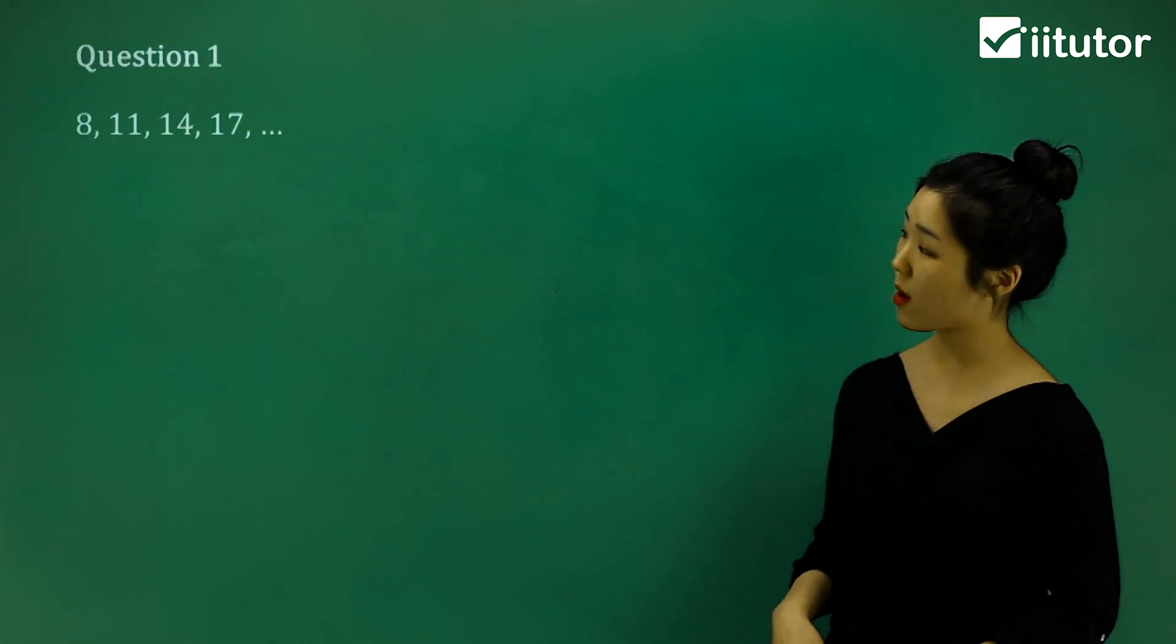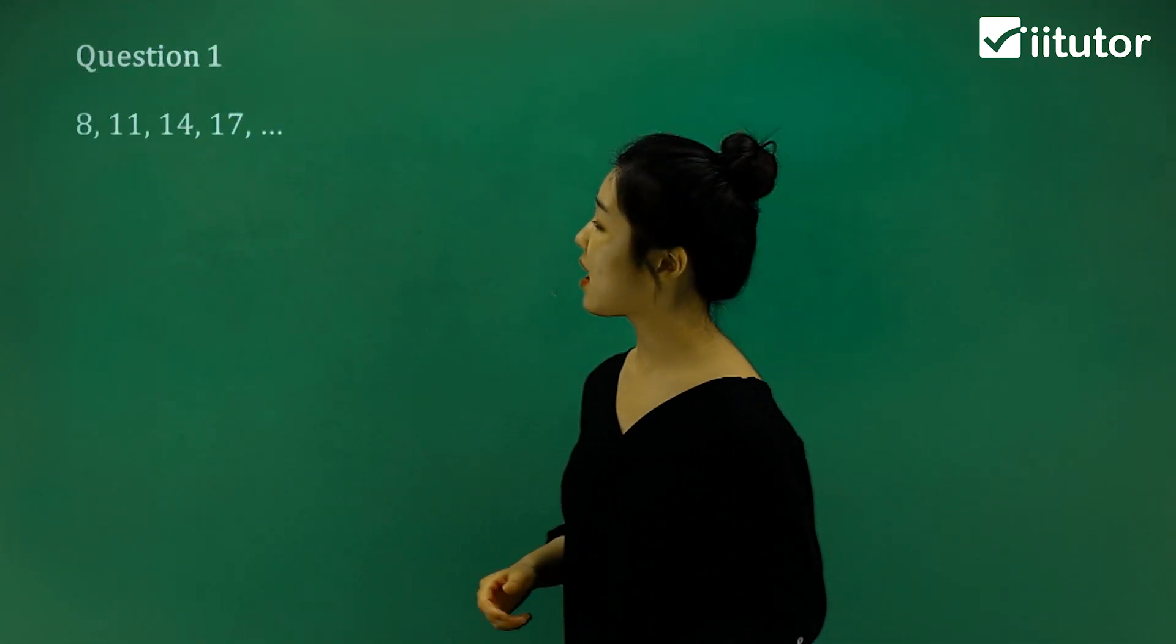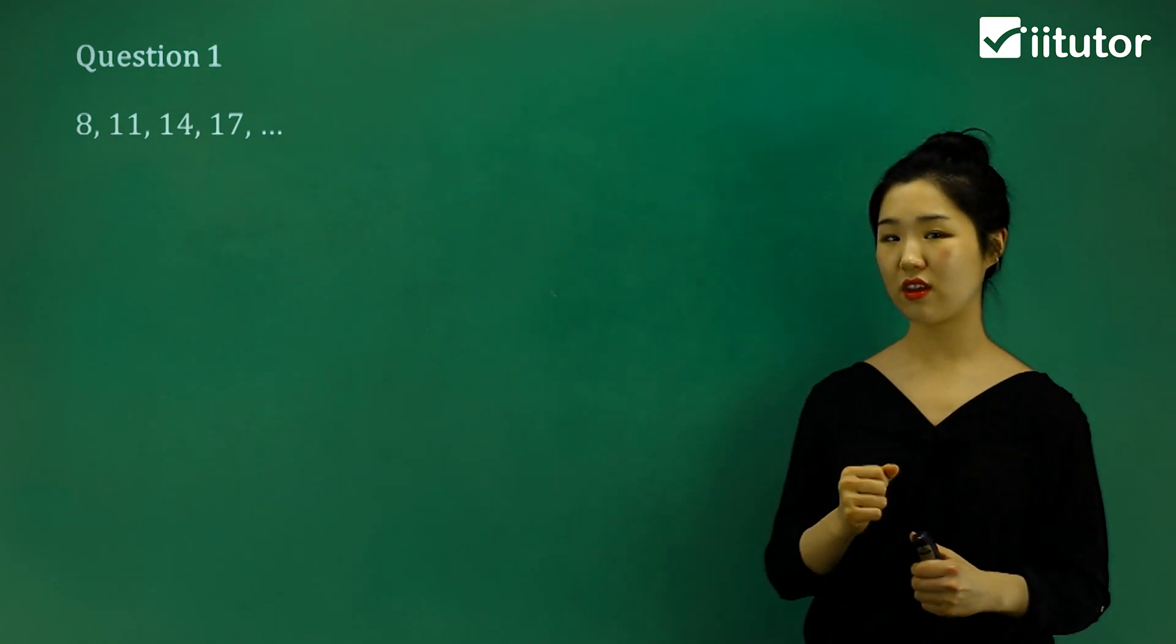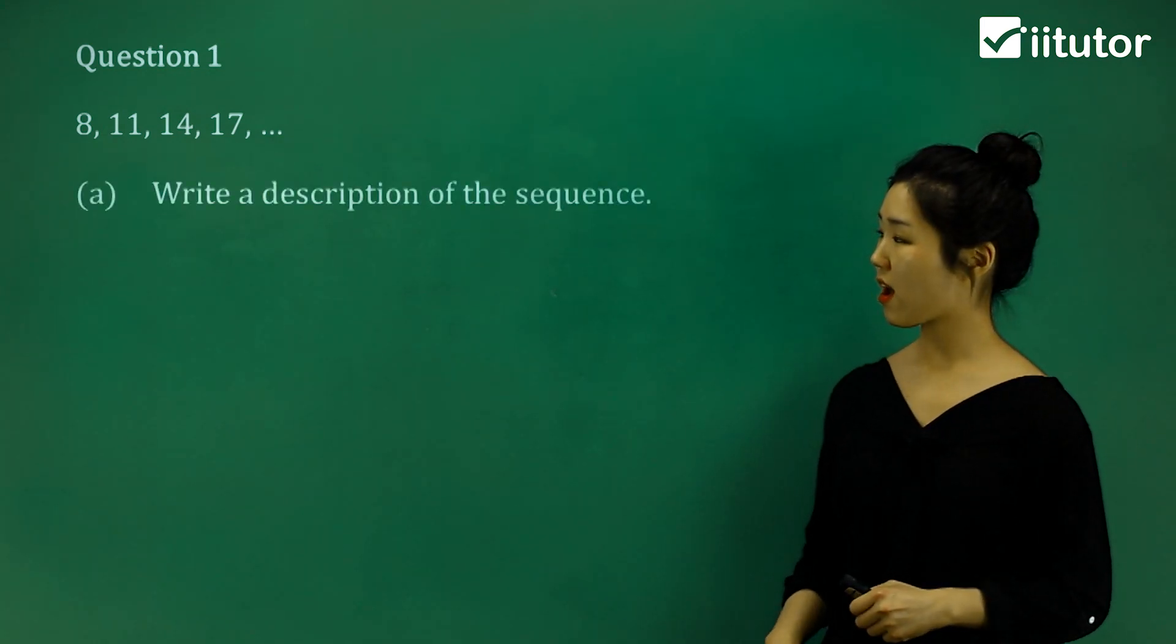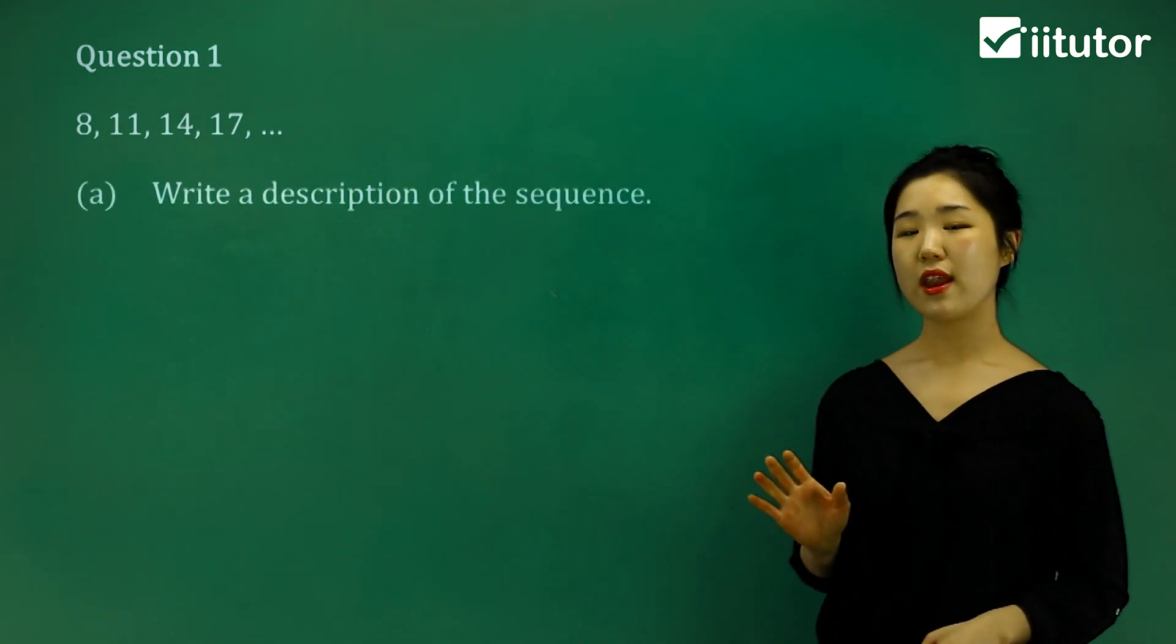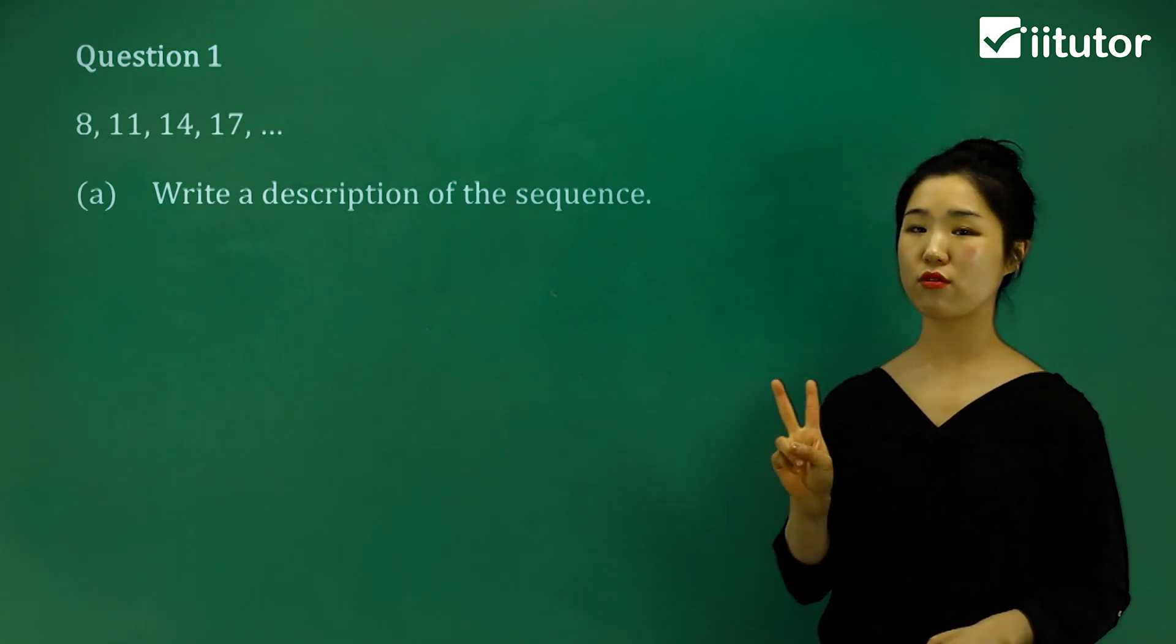So when I get to question 1, it's another sequence. It's got 8, 11, 14, 17, it goes on and on. And the first question asks us to write a description. Now, to write a description, guys, you have to remember just 2 things.